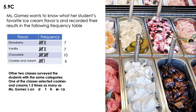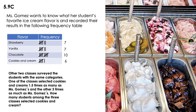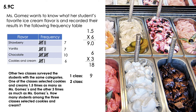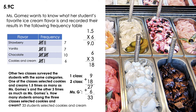Two other classes surveyed students with the same categories. One class selected cookies and cream one and a half times as many as Ms. Gomez's class, and the other three times as many. How many students among the three classes selected cookies and cream? The first class: 1.5 times 6 equals 9. The second class: 3 times 6 equals 18. So 9 plus 18 equals 27. Adding Ms. Gomez's class — 6 — the total is 33. So 33 students selected cookies and cream among the three classes.